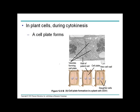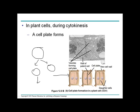In plant cells, cytokinesis does not use a cleavage furrow because plant cells depend on their rigid cell wall made of cellulose rather than actin filaments. Instead, specialized proteins form a cell plate between the two daughter cells, separating the cytoplasm into two parts. The daughter cells will have a smaller volume and must grow after division.